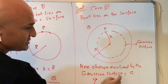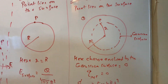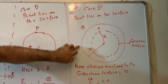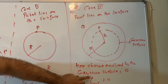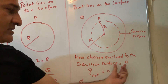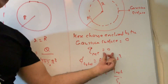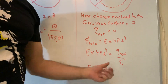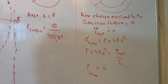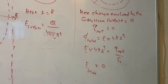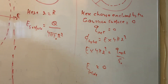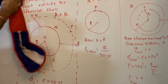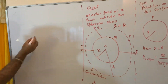Inside the Gaussian surface, there is no charge — it's a hollow sphere. The charge is only on the outer surface (solid line). So the charge enclosed by the Gaussian surface is zero. Q_net = 0. Applying Gauss's law: phi total = Q_net / ε₀ = 0, so E inside = 0.